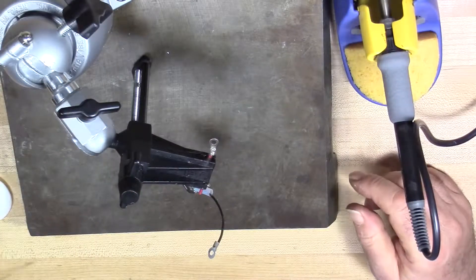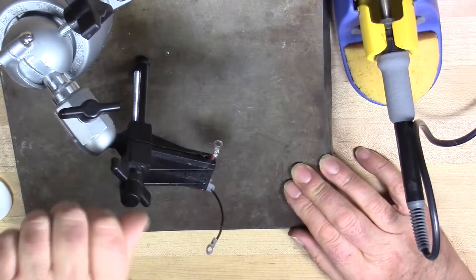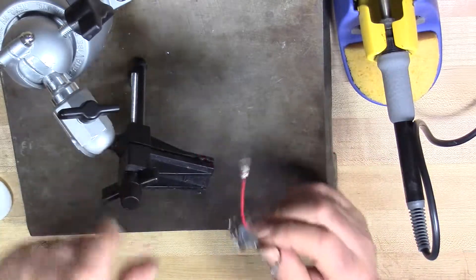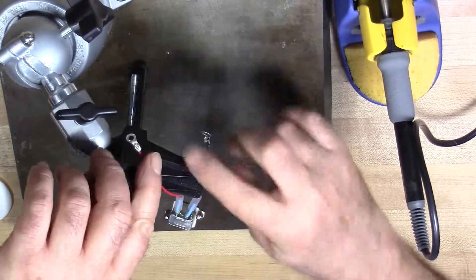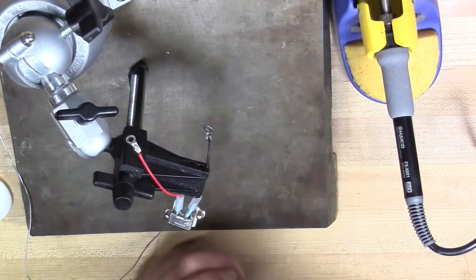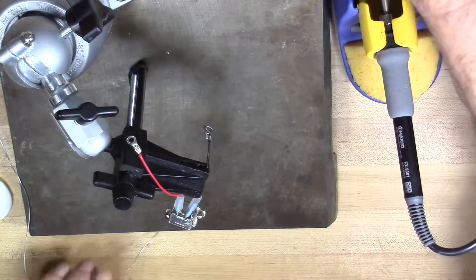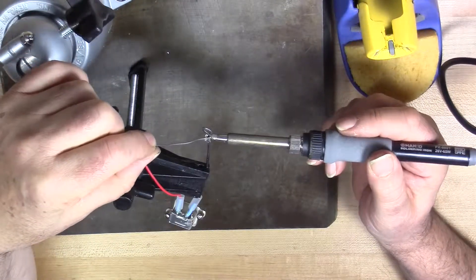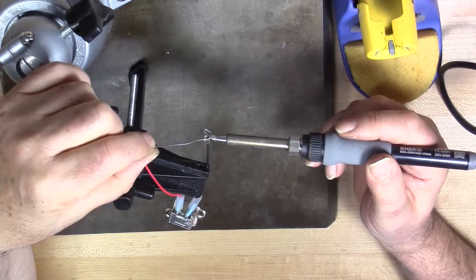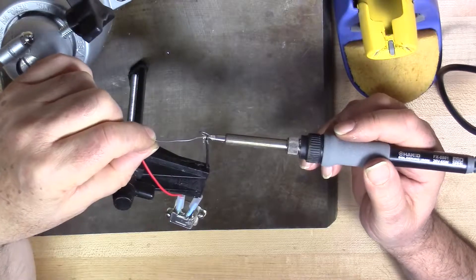And I'm going to do that again for the black, negative one. And applying the solder. I'm using solder on the soldering iron to facilitate heat transfer. This solder is not being used to make the solder junction and shouldn't be used for that.